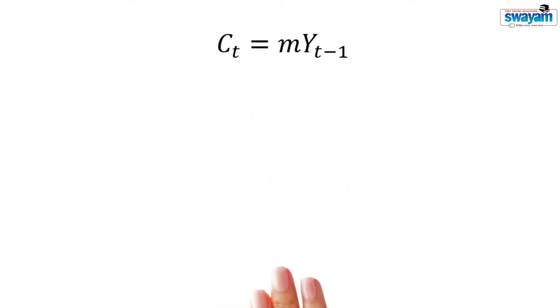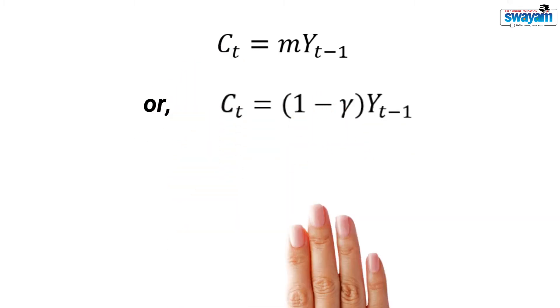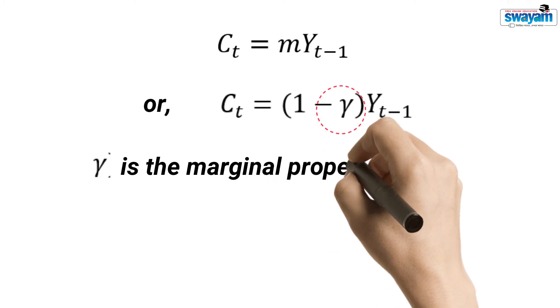Consider a consumption function again. This consumption function may also be written like this. What is gamma? Gamma is the marginal propensity to save.